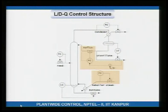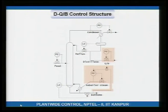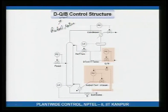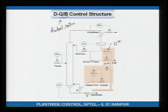Similarly, there is an L/D, Q structure where the operator sets Q and L/D. There is also a D, Q/B structure where Q/B is called the reboil ratio. The bottoms flow is measured and multiplied by the Q/B set point to give the steam flow set point, and the steam flow controller moves the valve accordingly. The operator sets D and the reboil ratio.